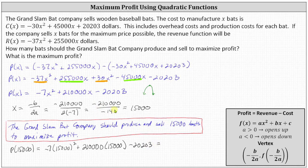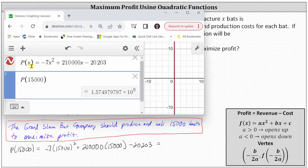Now let's go to the calculator. Actually, if we use desmos.com, we can find this value much quicker by entering in the profit function and then entering in P of 15,000. Notice we have 1.574979797 times 10 to the power of nine, which is scientific notation. Let's first write this down and then convert to decimal notation.